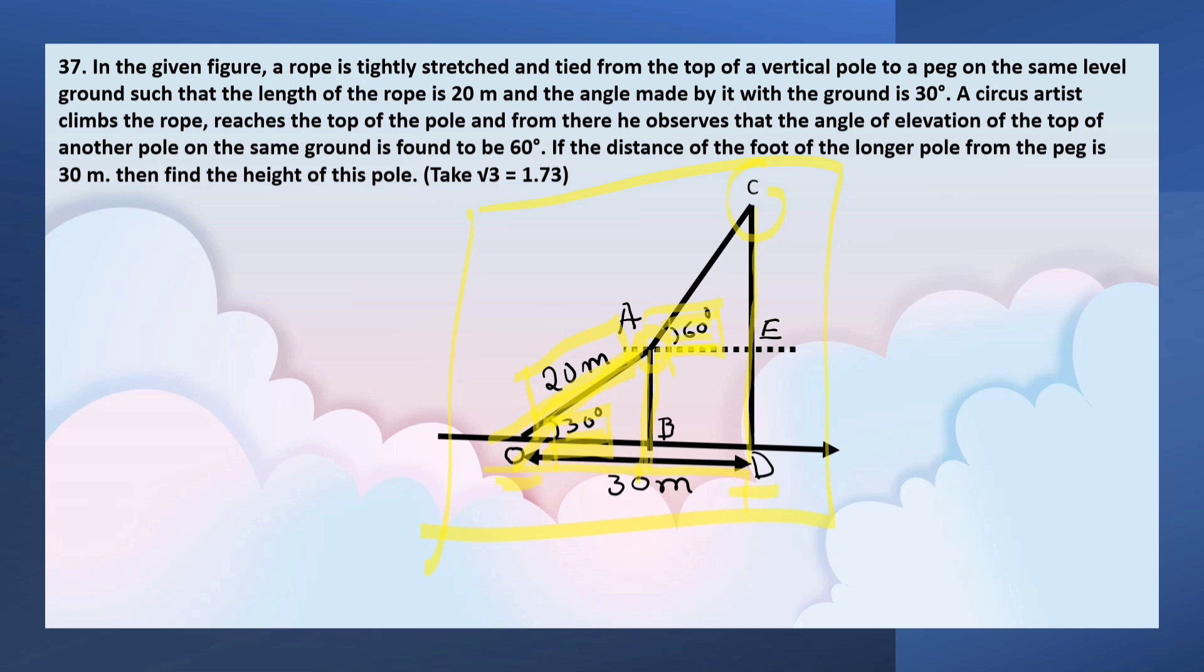If the distance of the foot of the longer pole from the peg is 30 meters (OD is 30 meters), find the height of the longer pole CD.